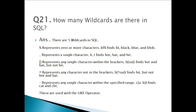The circumflex (^) represents any character NOT in the brackets — H[^OA]T finds HEAT but not HOT and HAT. The hyphen (-) represents any single character within the specified range — C[A-B]T finds CAT and CBT. These wildcards are basically used with the LIKE operator.